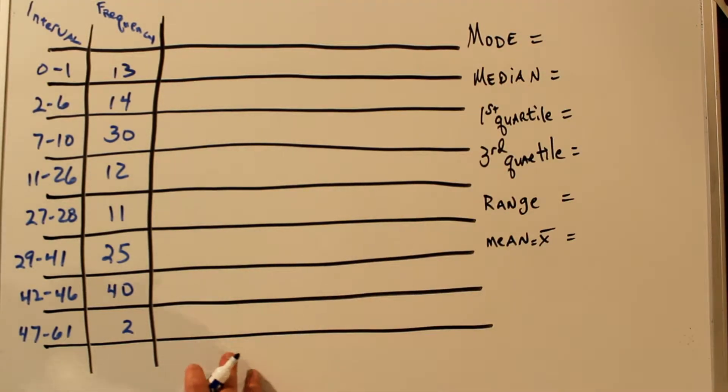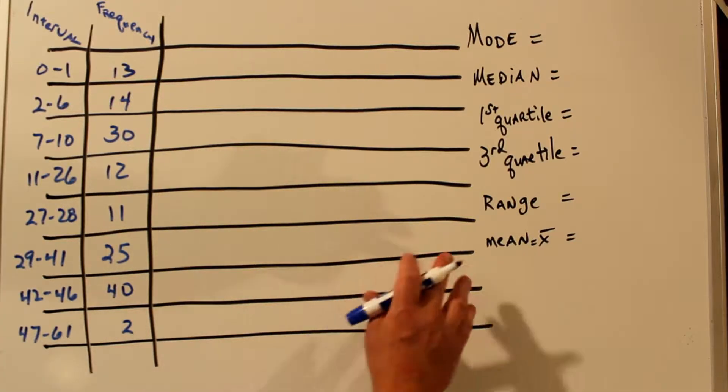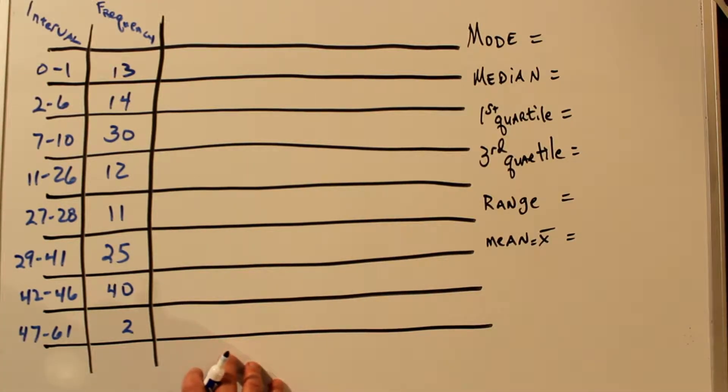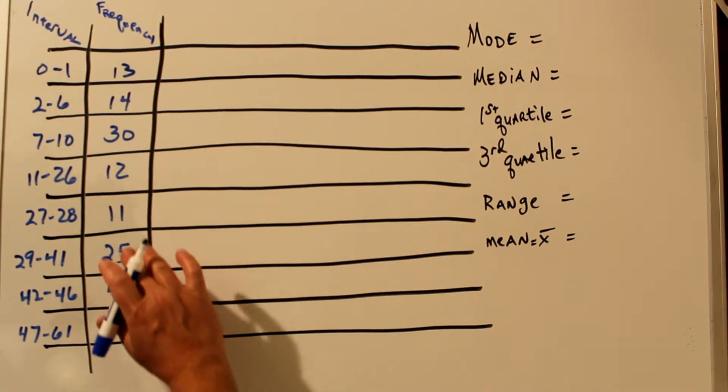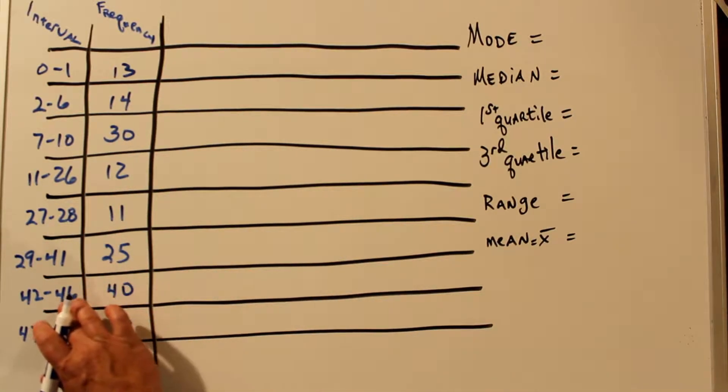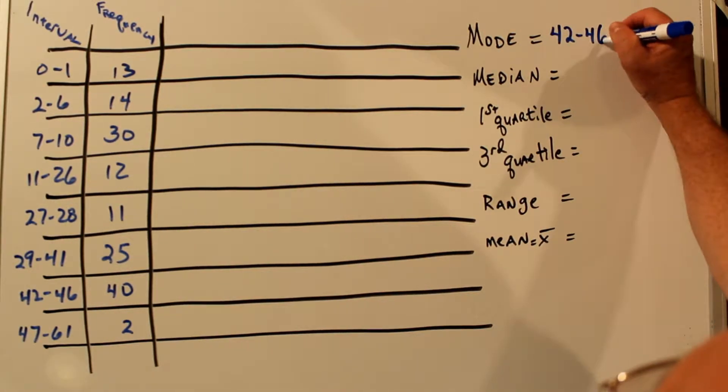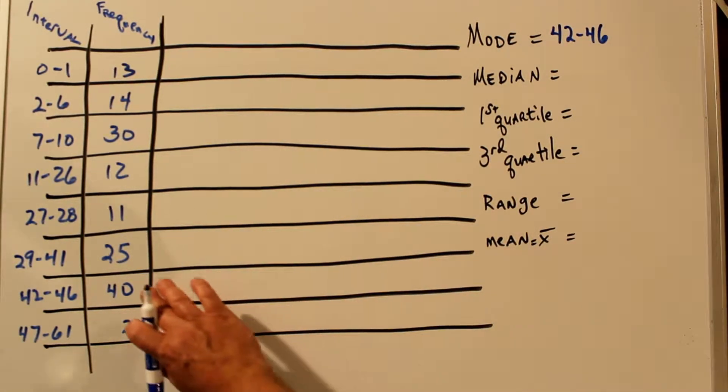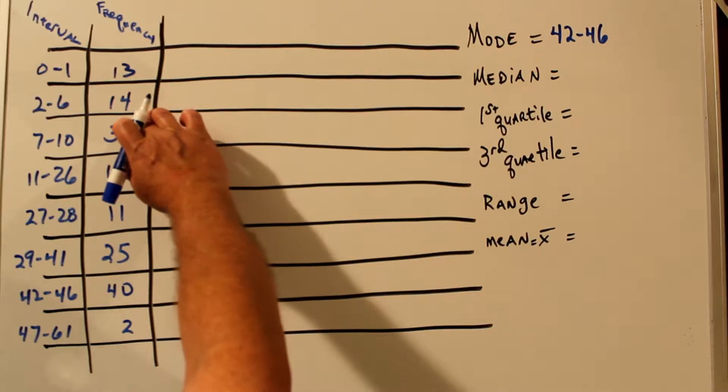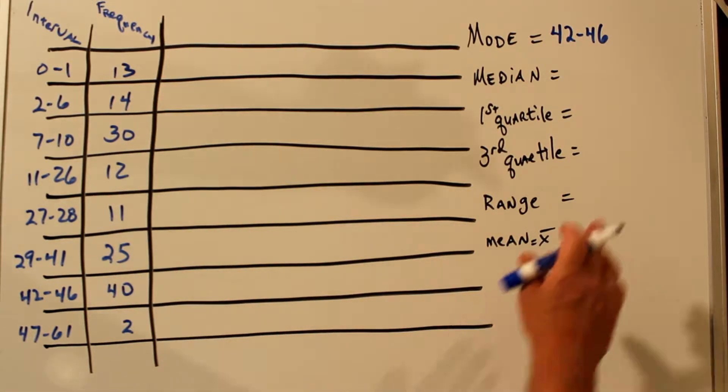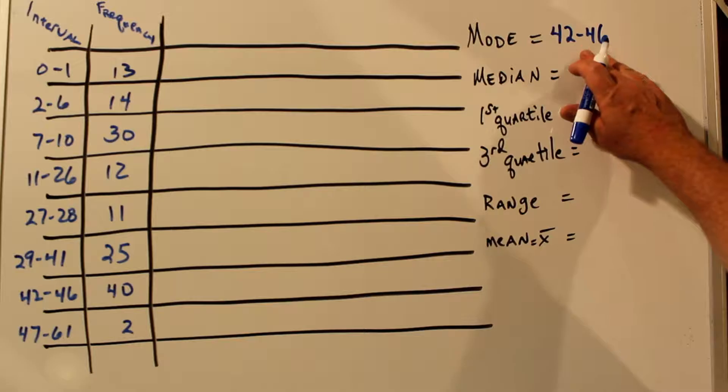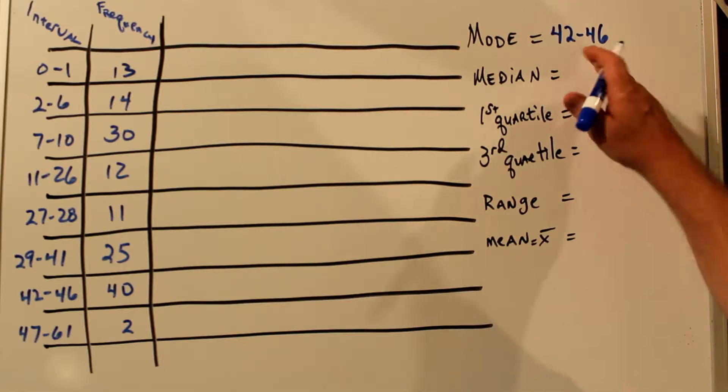The mode is similar to finding a mode of single data points. We're looking for the modal category, the category with the most data points in it. In this case, if you look down through, you'll find 40 data points in this category. So 42 to 46 would be the answer, the name of the category. Now let's suppose there were two categories that had 40 in it. You would put none for mode. If there isn't one unique answer, then there is no mode. But in this case, there's only one, so we write down that range.